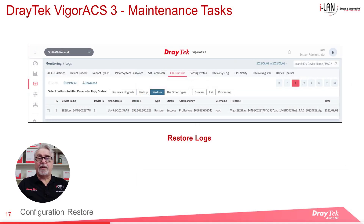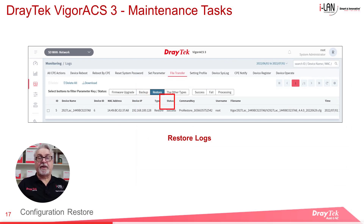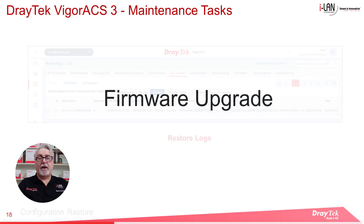After the Configuration Restore is completed, you can check the restore logs in the Monitoring section of ACS3 to see how it went. If all went well, you should see Success in the Status column. Let's now look at Firmware Upgrade.